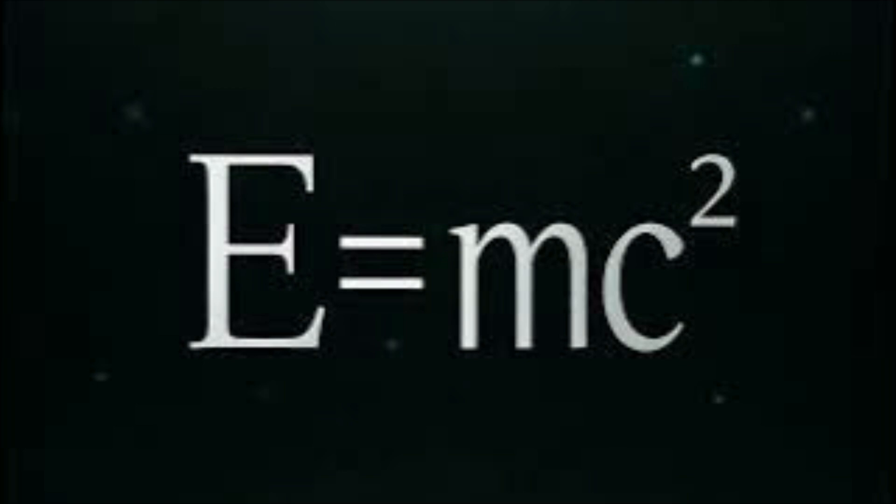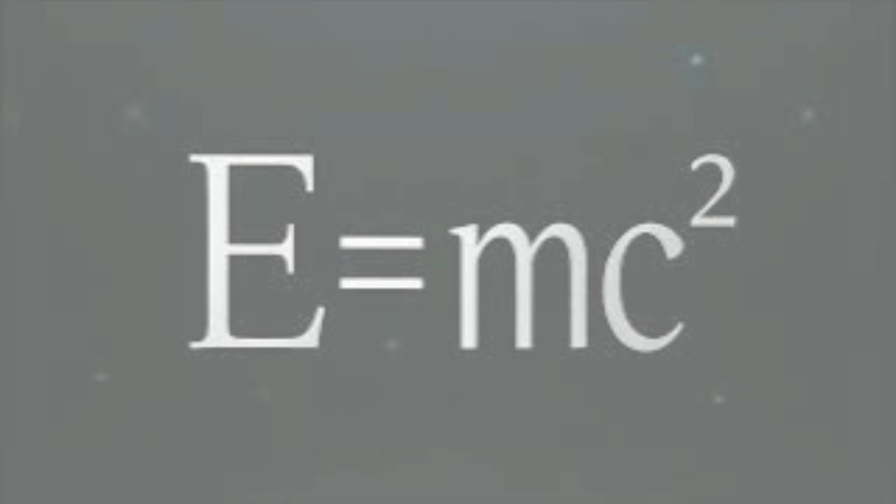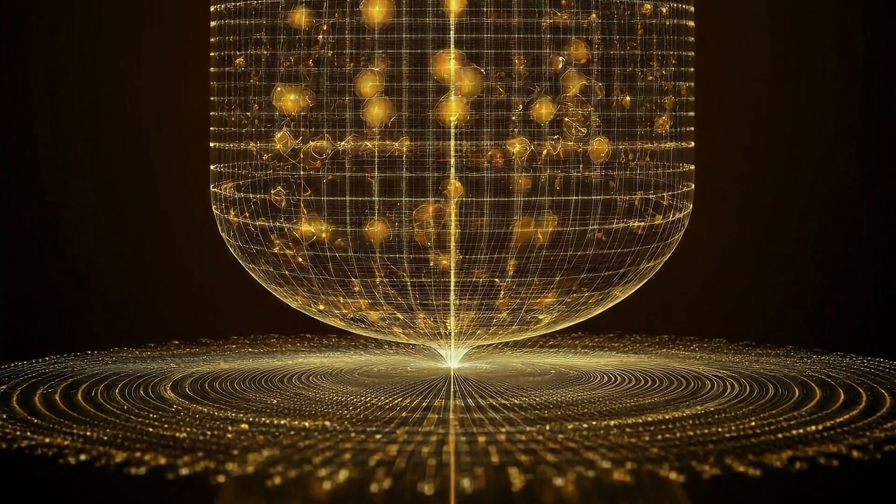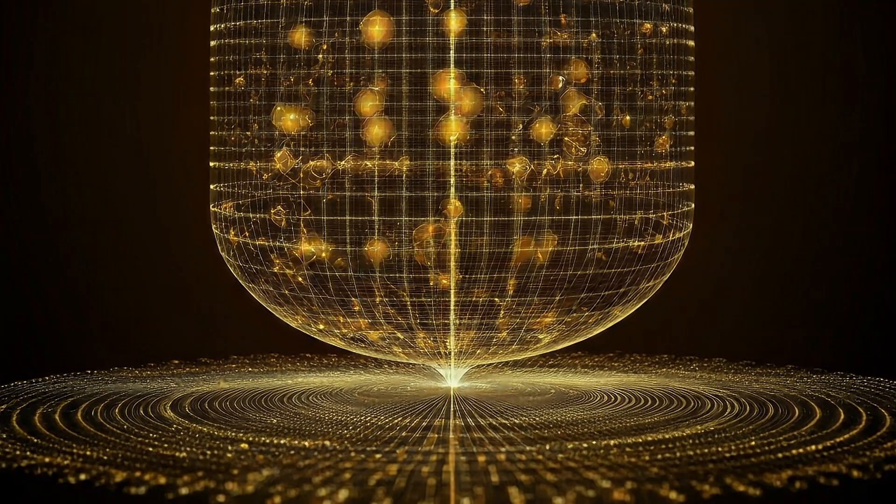The fifth dimension: the dimension of processional wobble, introducing cyclical patterns and the possibility of multiple timelines. The sixth and seventh dimensions: the dimensions of orbital motion and orbital tilt, revealing the intricate dance of celestial bodies.